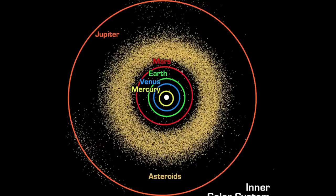The image I'm showing you right now comes from NASA and gives you the orbits of the inner planets, the asteroid belt, and Jupiter. You can see that the orbits for nearly all of these planets are very circular. The only ones that deviate very much from that would be Mercury and Mars.